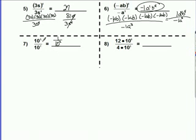On number 8, we can simplify these. 4 goes into here 1 time, into here 3 times. So I've got 3 over 1. Next, I can do 6 minus 3. That gives me 10 to the 3rd, and that's over 1.